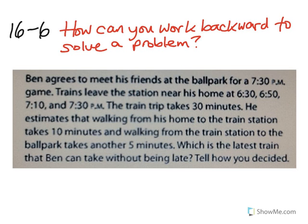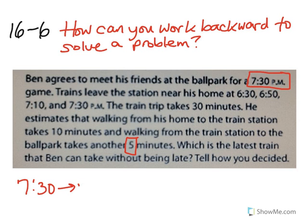What is the latest time that Ben needs to be at the ballpark? 7:30pm would be the absolute latest since that is the time at which the game begins. So as we work backward, what time must Ben get off the train in order to get there at 7:30pm? Since it's going to take him another 5 minutes to walk from the train station to the game, that gives us 7:25pm. He must get off the train by 7:25pm in order to get to the game on time.